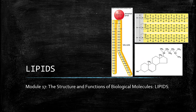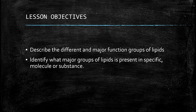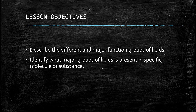Good day everyone. This is SCM007 or General Biology 1. For today's lesson, we are going to discuss lipids as one of the four biological molecules which can be found in organisms. By the end of this lesson, you will be able to describe the different and major function groups of lipids and identify what major groups of lipids is present in a specific molecule or substance.